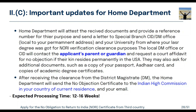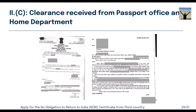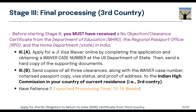The Home Department will send a letter to your university where you received your last degree, and to your local CID or DM office at your permanent home address. They will contact your parents and ask for documents. This is a very long process — be patient, it takes three to four months. Once they receive clearance from the CID or District Magistrate, the Home Department will send the No Objection Certificate to the Indian High Commission.